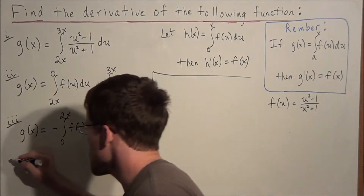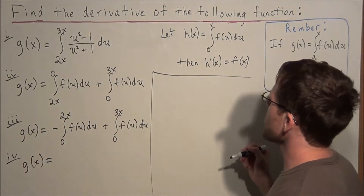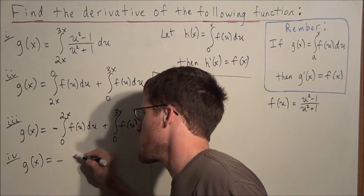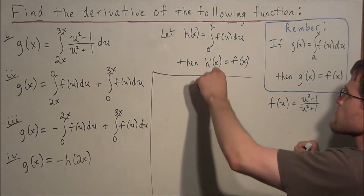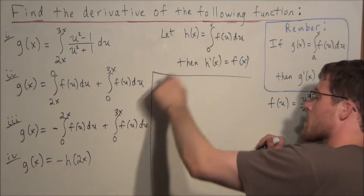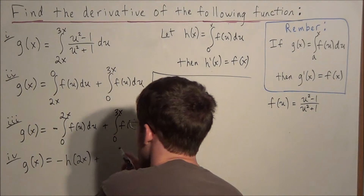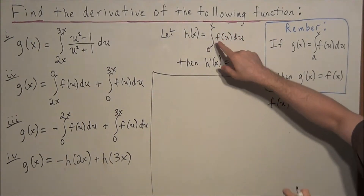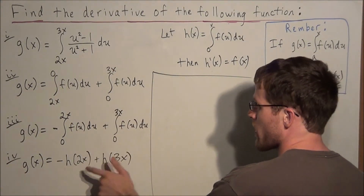We can redefine g of x using this notation. Since h of x determines the top piece of our integral, the first integral with 2x on top is the same as negative h of 2x. The second integral with 3x on top is just h of 3x. So g of x equals negative h of 2x plus h of 3x. All we've done is take out the integrals and write everything in function notation so we can apply the second fundamental theorem of calculus.